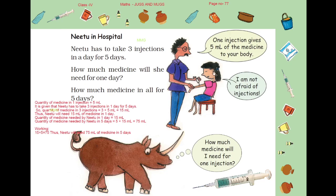I am not afraid of injections — she is telling us that. So, you all know the quantity of medicine in one injection equals 5 ml. It is already given in the question that Neetu has to take 3 injections in 1 day for 5 days. For finding the quantity of medicine in 3 injections, we will multiply 3 with 5, and we will get 15 ml as the answer.